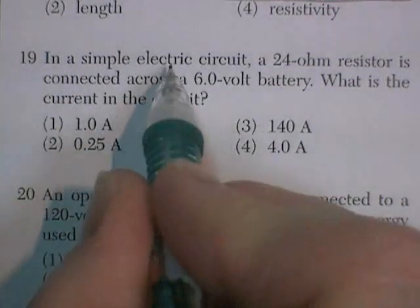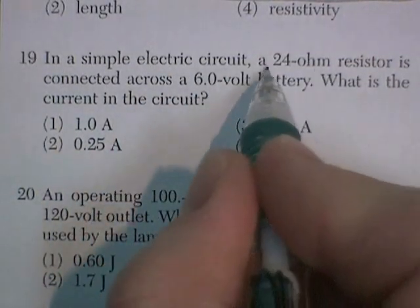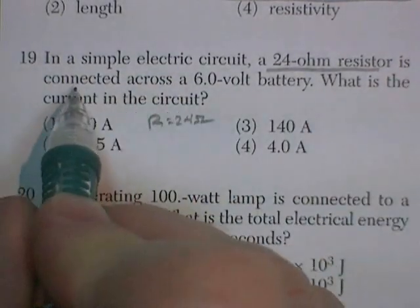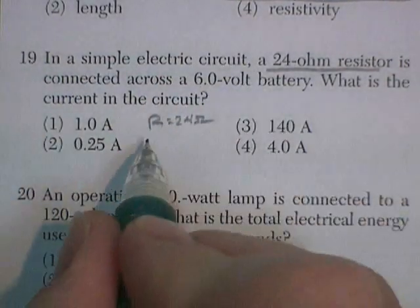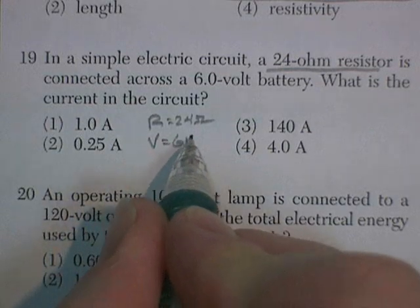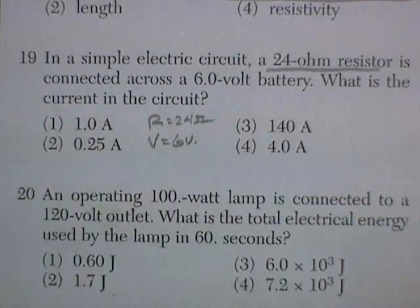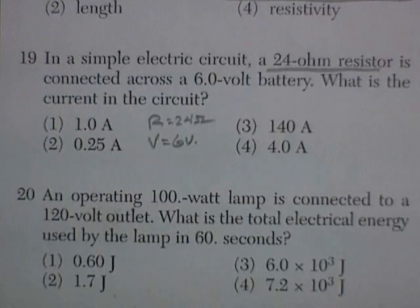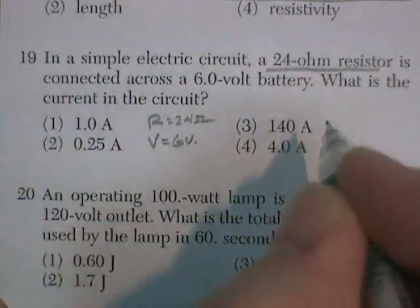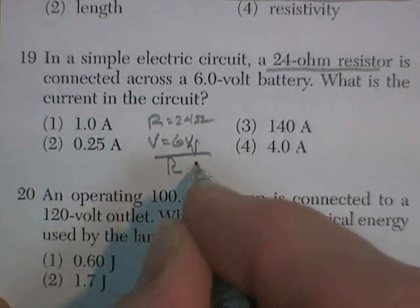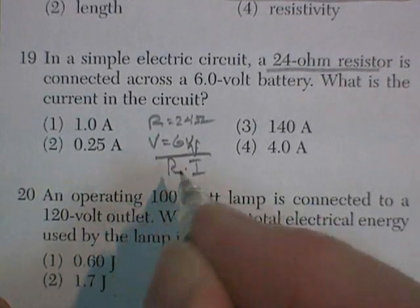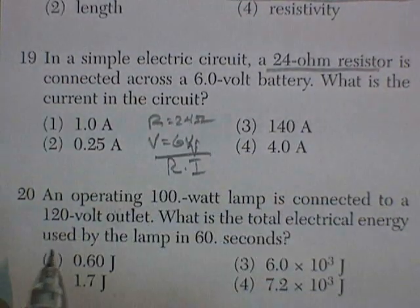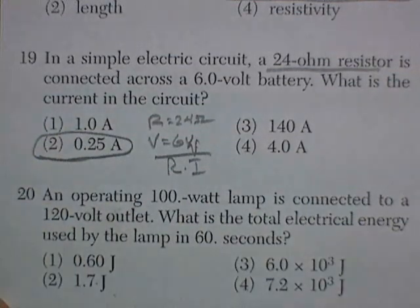Question 19. In a simple electric circuit, a 24-ohm resistor is connected across a 6-volt battery. What is the current in the circuit? Well, electrical resistance is equal to voltage divided by current. So R equals V over I. Therefore, I is V over R. 6 divided by 24. I'm going with 0.25.